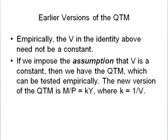Empirically, the V in the identity above need not be a constant. If we impose the assumption that V is a constant, then we have the quantitative theory of money which can be tested empirically. The new version of the quantitative theory of money is: real money supply is equal to ky, where k is equal to 1 over the velocity.